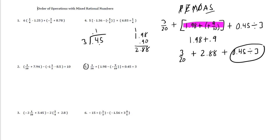3 goes into 4 once. 1 times 3 is 3. 4 minus 3 is 1. Bring down the 5. 3 goes into 15 five times. So 0.15.